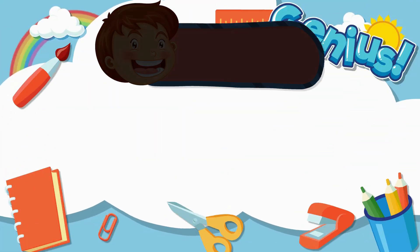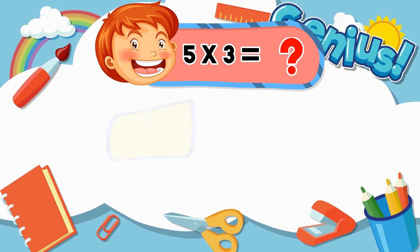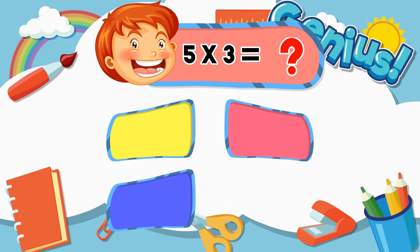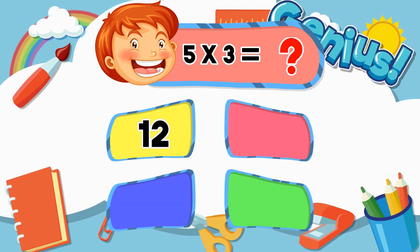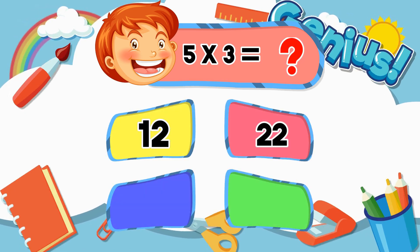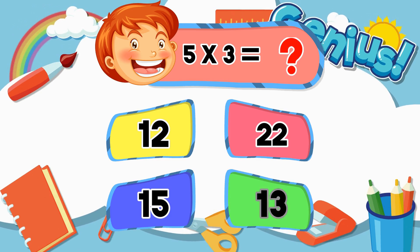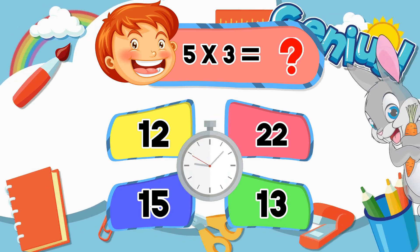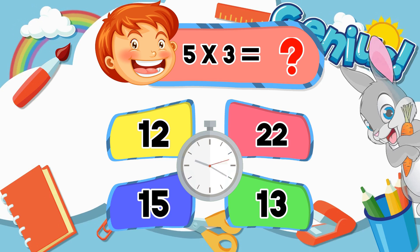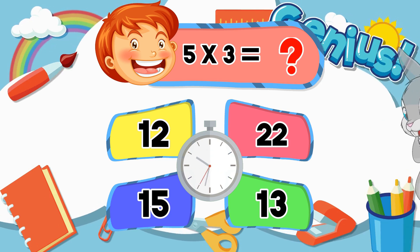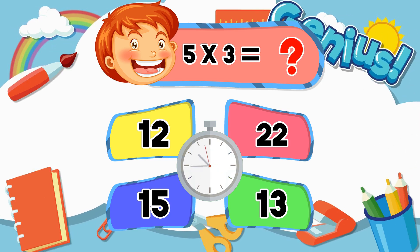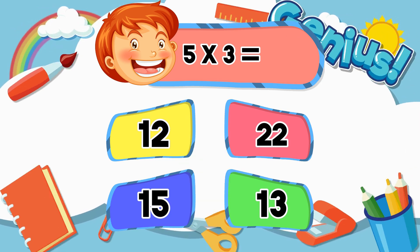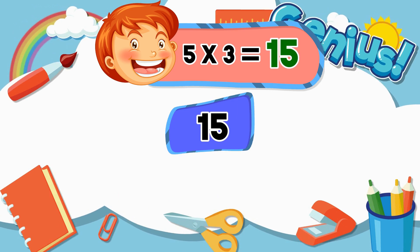What is 5 times 3? Options: 12, 22, 15, 13. The answer is 15.